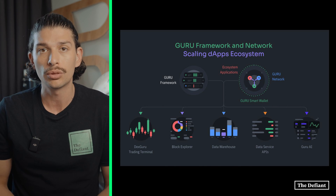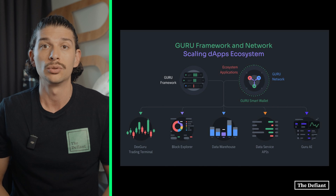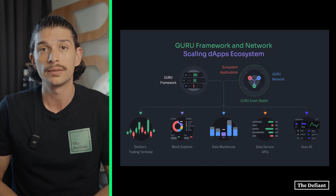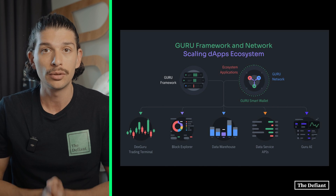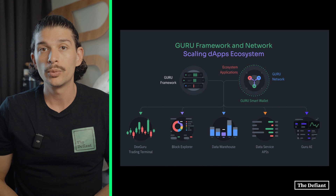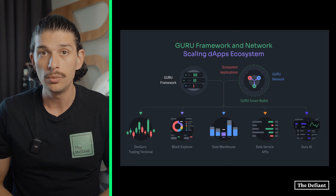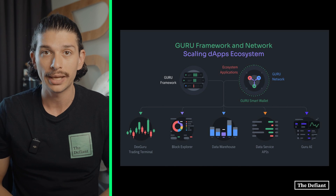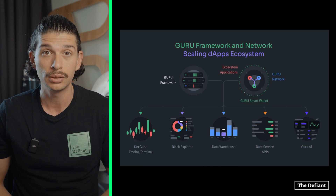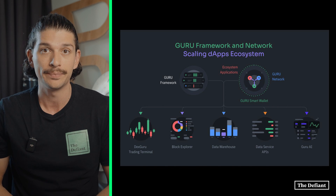Guru can be broken down into three primary categories: the Guru Network, the Flow Orchestrator and the Guru Framework. The Guru Network is responsible for providing a home for both real-world actions as well as blockchain business process automation, otherwise known as BBPA.